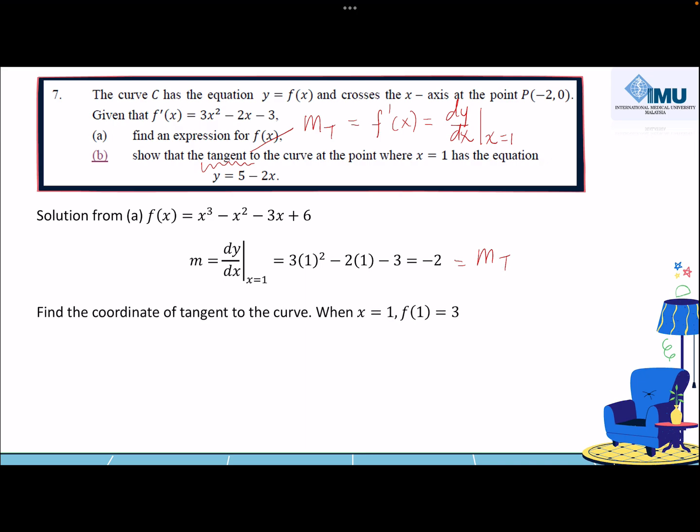Once you have the gradient of the tangent, you want to find the equation of the straight line. You can use the formula y - y₁ = m(x - x₁), or you can also use another equation which is y = mx + c. This equation is the equation of a straight line. Feel free to use any of these. However, for this situation, I'm going to use the first formula to find the equation of tangent.